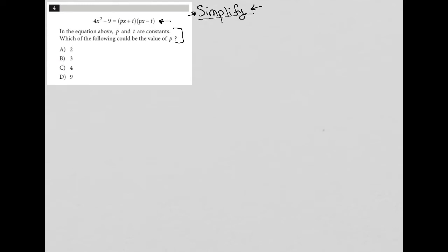So that strategy just says, don't try to answer the question right away. Instead, attempt to simplify what you have. So if I have 4x squared minus 9 is equal to px plus t times px minus t, how do I simplify that? Well, 4x squared minus 9 is going to stay the same potentially. So here's one way to do it.